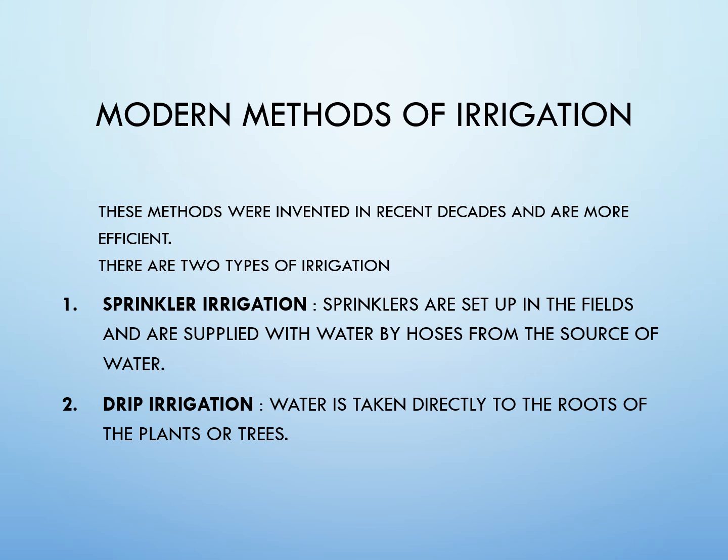Modern methods are those methods that are invented in recent decades and are more efficient methods of irrigation. These help us use water economically without wastage, so they are gaining popularity. There are two types of irrigation: sprinkler irrigation and drip irrigation.